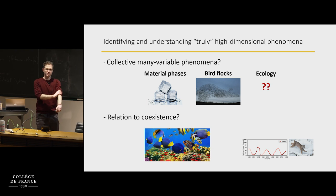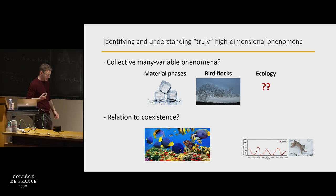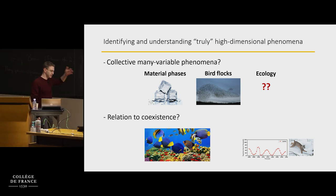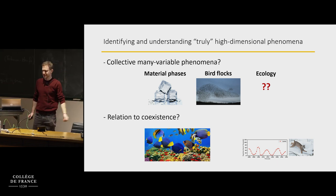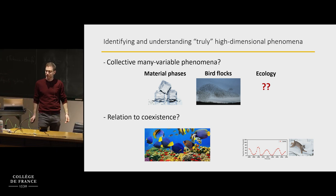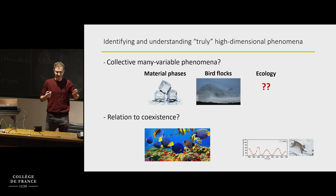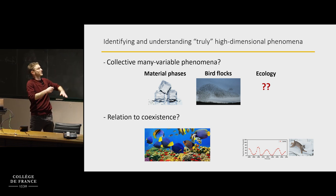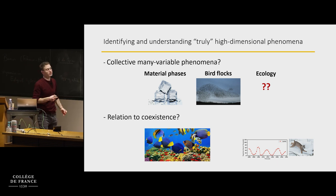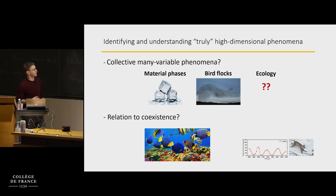Collective many-variable phenomena exist across many fields. We know examples like material phases — water is a liquid at plus one degree Celsius and a solid at minus one degree Celsius. This is a very dramatic effect of the fact that there are many molecules in a piece of ice. Going closer to biology, flocks of birds — obviously the birds are interacting somehow. The question is what would be something of this sort in ecology.